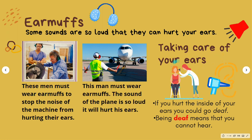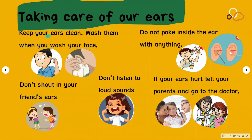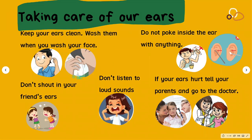How do we take care of our ears? If you hurt the inside of your ears, you could go deaf — meaning you cannot hear. Some people use a hearing aid to help them hear better. Here are some ways to look after your ears: keep your ears clean and wash them when you wash your face. Do not poke inside the ear with anything. Don't shout in your friend's ears. Don't listen to loud sounds. And most importantly, if your ears hurt, tell your parents and go to the doctor.